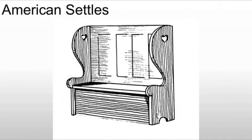We will also see the American settle — again, a high-back bench. The whole purpose is to pull it up in front of a fire. The wings keep the wind off of you if there's a breeze coming through the home. Sometimes these even have a hood — a flat piece across the top, maybe 12 to 24 inches wide — to create more cover and warmth. It's a multi-purpose piece with storage underneath. In American examples, the wings tend to be very wide because these are more pioneer people, so life is a little bit harder and you want that extra warmth.